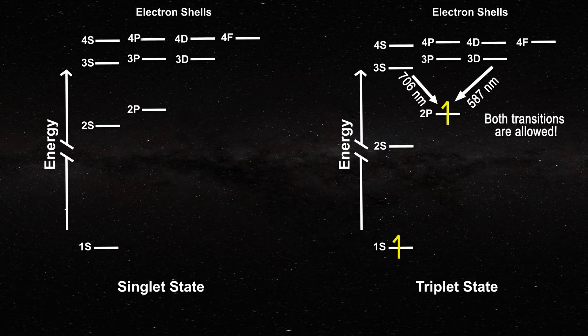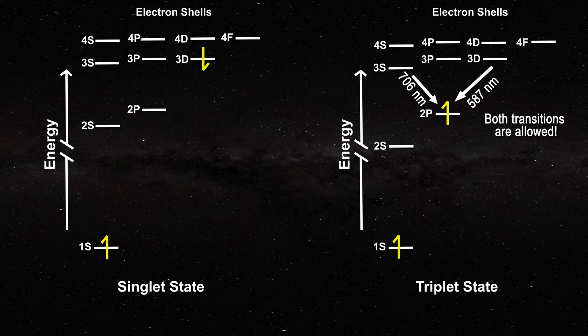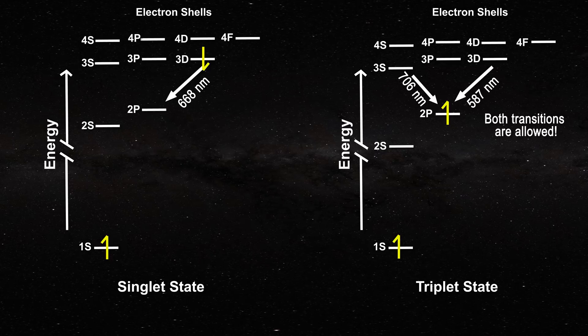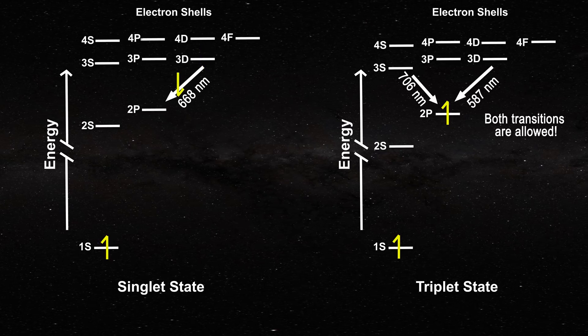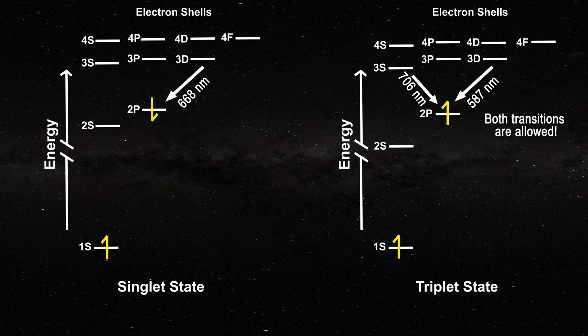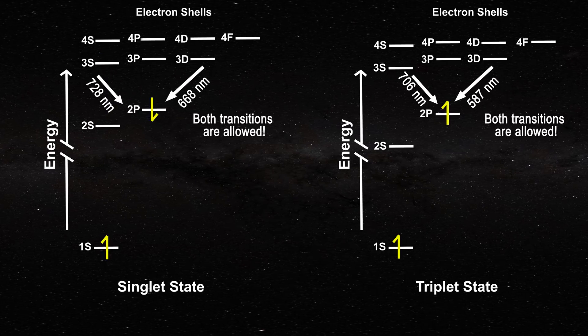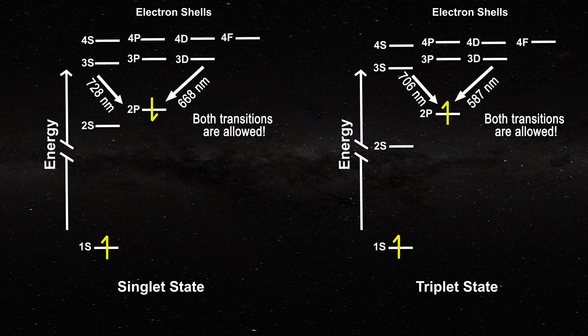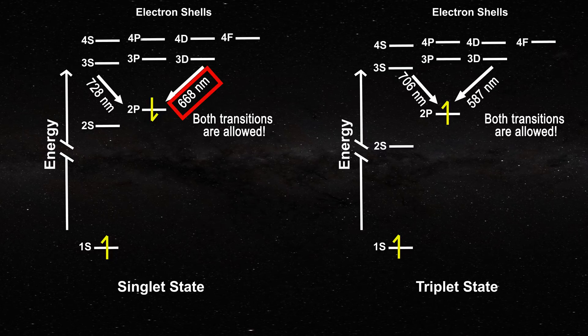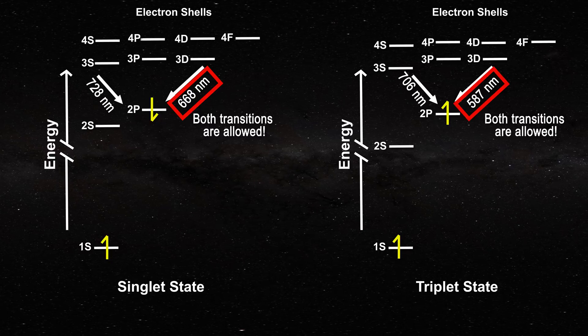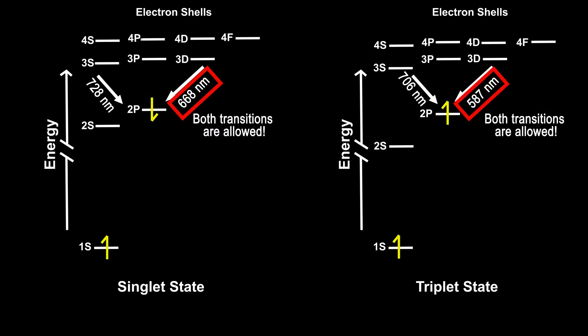Now, if you consider the singlet diagram, you will note that one might expect to see an emission line at 668 nanometers. That corresponds to a singlet transition from the 3d to the 2p level. You might also expect a singlet transition from 3s to 2p at 728 nanometers. In fact, those lines tend to be strong in laboratory helium spectra. The 668 nanometer line can have nearly the same intensity as the helium triplet at 587 nanometers. I have provided links to laboratory spectra in the description below.